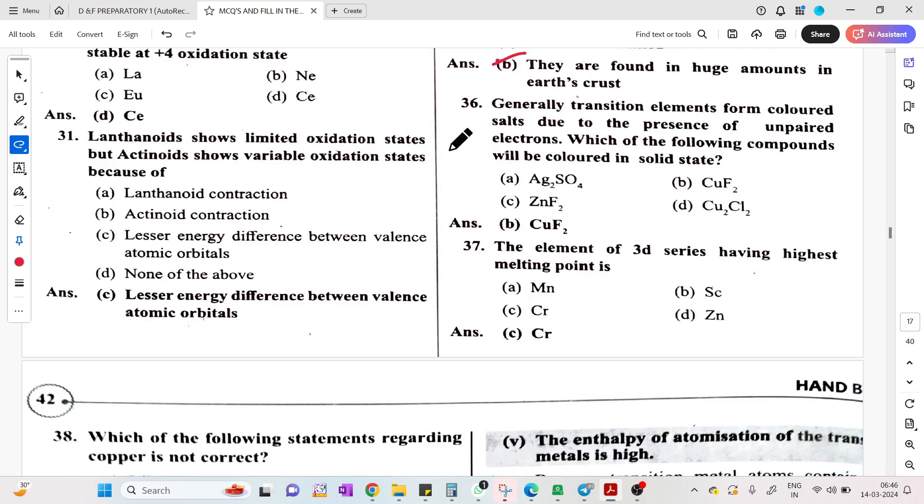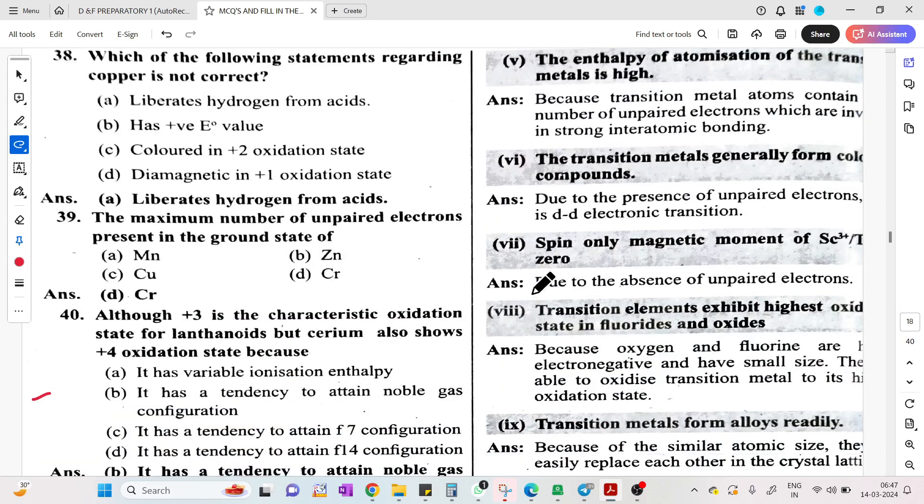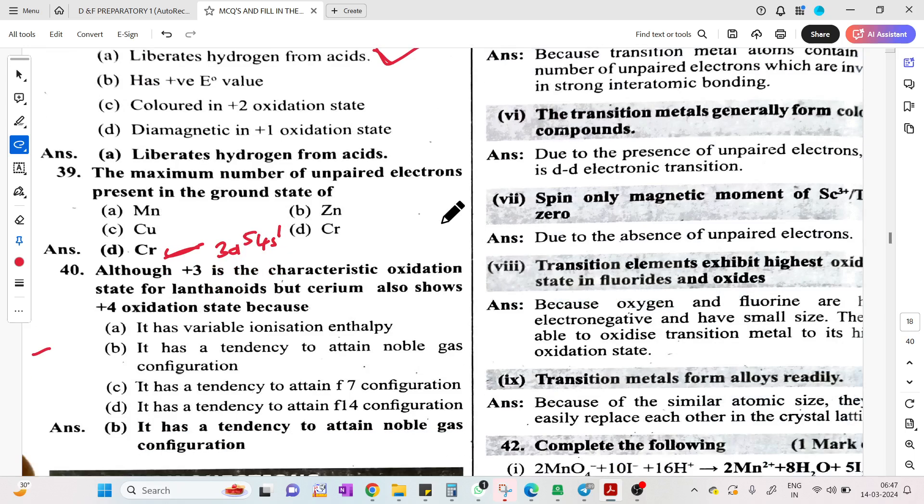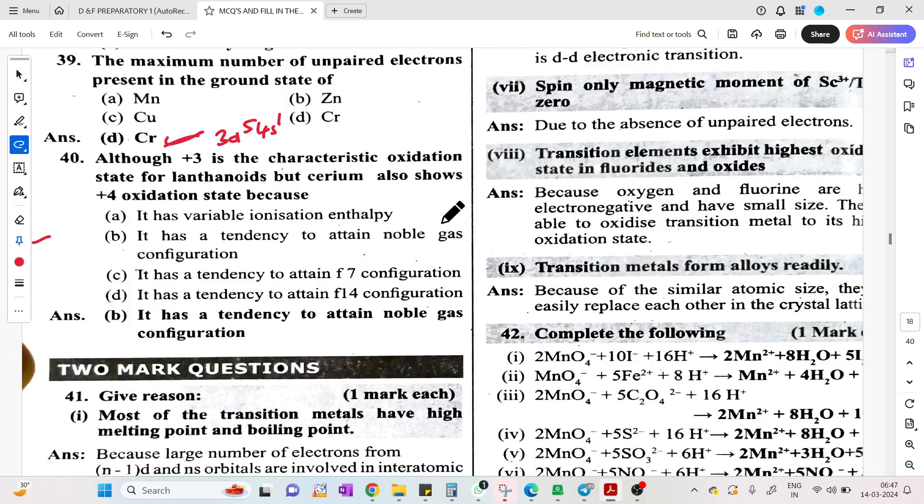Lanthanides show limited oxidation states but actinides show variable oxidation states because of lesser energy difference between valence orbitals. Generally transition elements form colored compounds - Cu2+ is colored in solid state. Element of 3D series having highest melting point is chromium. Liberation of hydrogen gas from acid not possible for copper. Maximum unpaired electrons in ground state is chromium 3D5 and 4S1. Although plus 3 is common for lanthanides, Cerium shows plus 4 oxidation state to attain stable noble gas configuration.